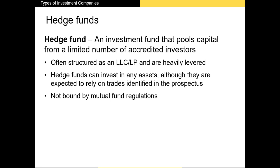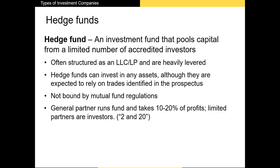Hedge funds also have very few reporting requirements — they don't have to disclose their portfolio or returns to the public, which is one reason academics know relatively less about the hedge fund industry than the mutual fund industry. A hedge fund manager makes money by charging an annual fee. Until recently, the most popular fee was called 'two and twenty,' where the manager received 2% of assets under management plus 20% of the fund's profits during the year. Recently, this fee has been significantly reduced as hedge funds face competition from passively managed funds.